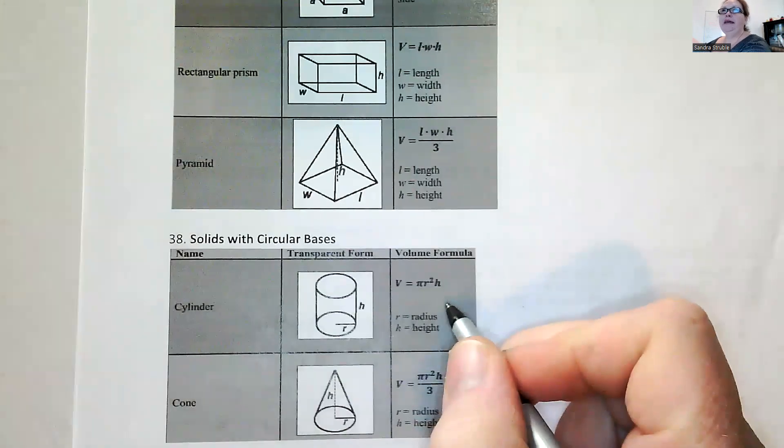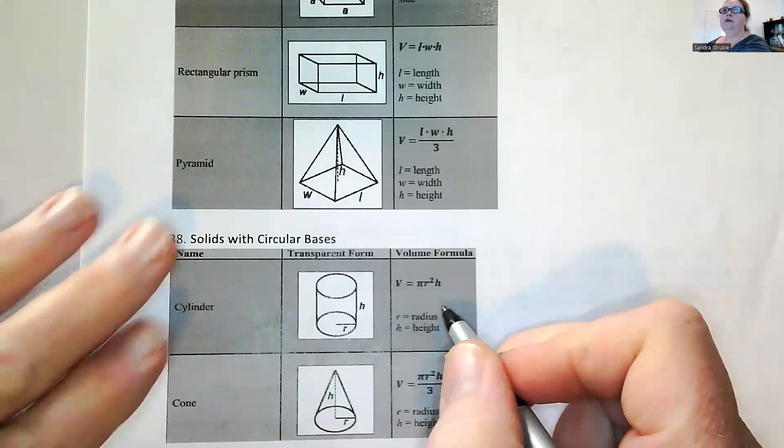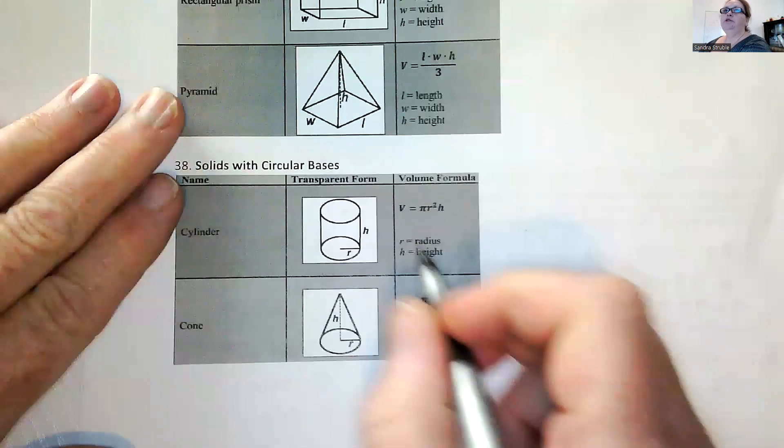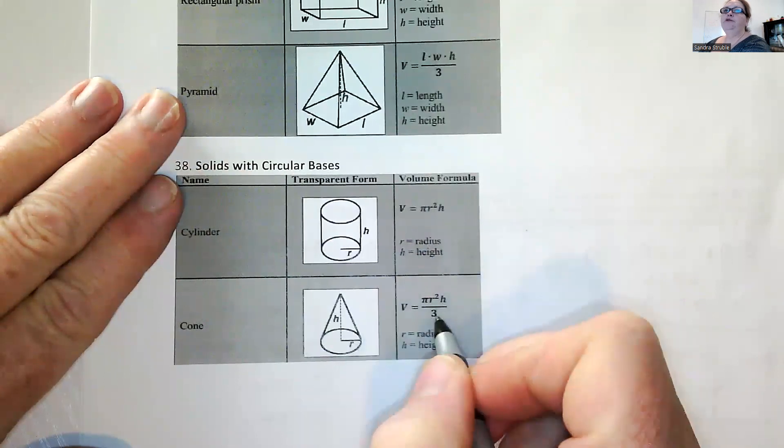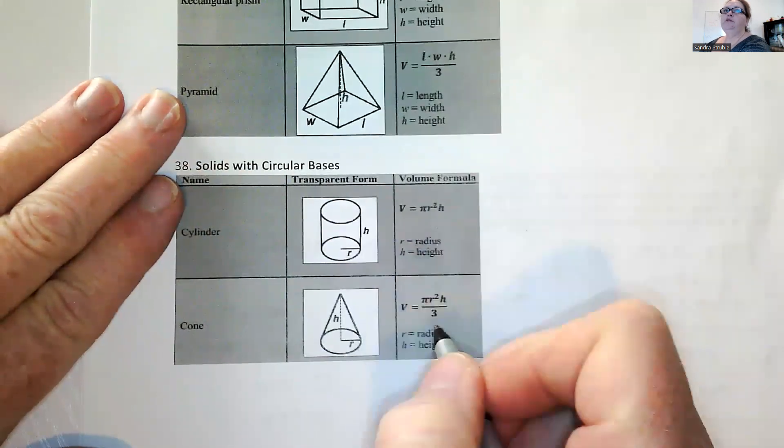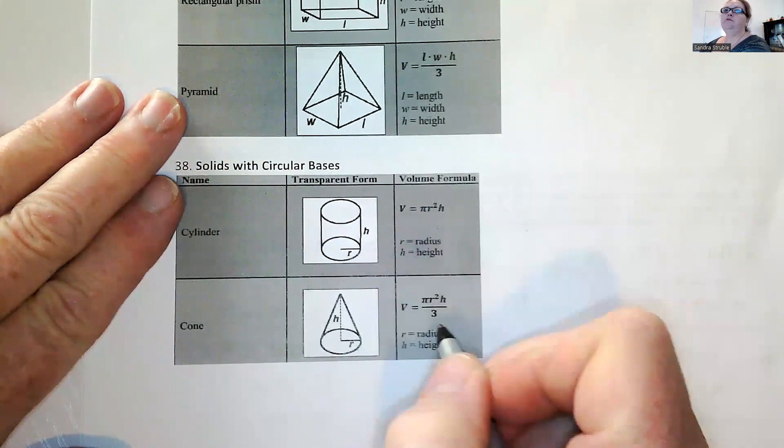Cylinder, which is like a can, like a can of goods. Pi r squared h is the volume. And the r is the radius, the h is your height. And then for a cone, it's a third of the volume of a cylinder. So it's pi r squared h divided by three.